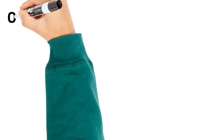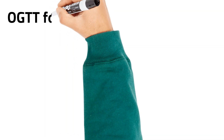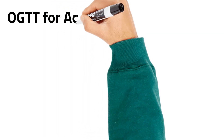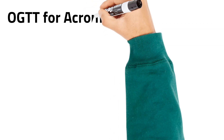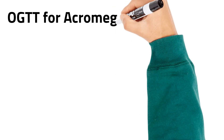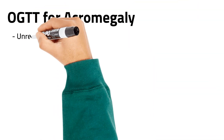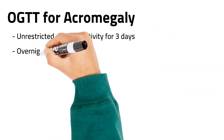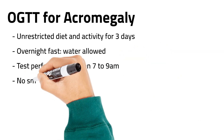For acromegaly, the requirements prior to oral glucose tolerance test are similar and include unrestricted diet and activity 3 days before the test, an overnight fast with water allowed, discontinuation of medications before the test, and no smoking during the procedure. The test should be performed between 7am and 9am, and the procedure involves collection of a fasting baseline serum sample for growth hormone and insulin-like growth factor 1 (IGF-1), together with a venous plasma sample for glucose.